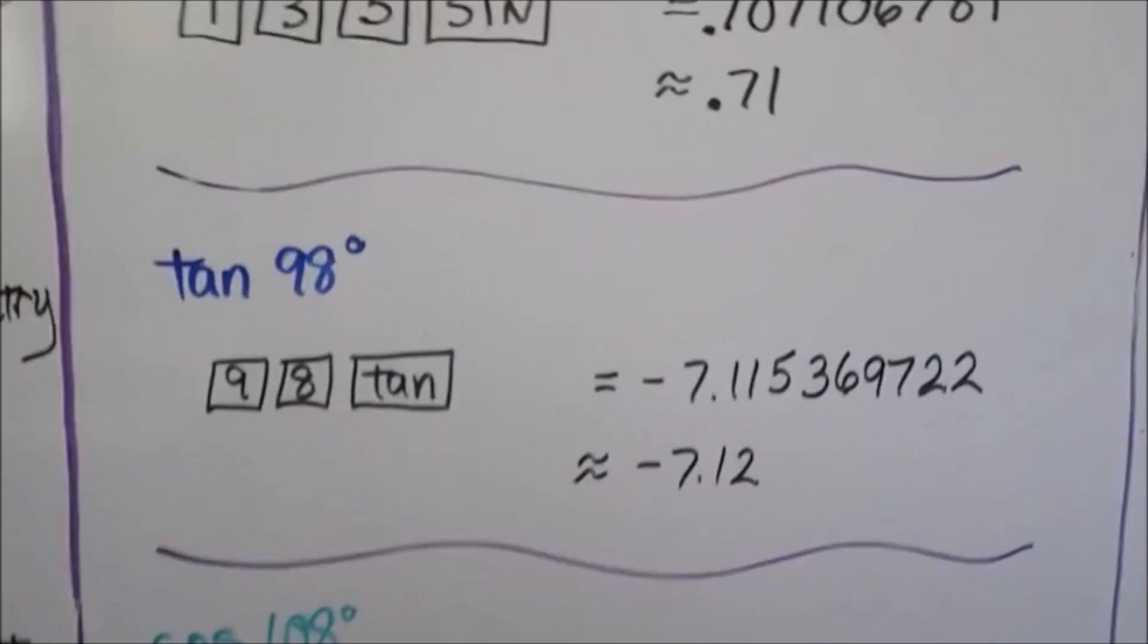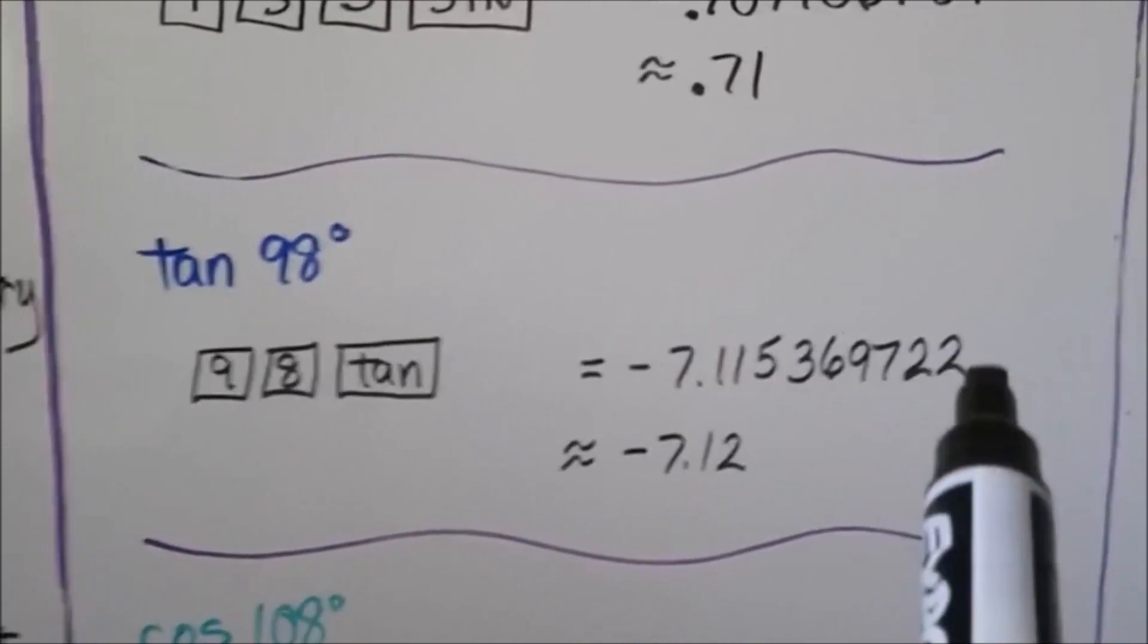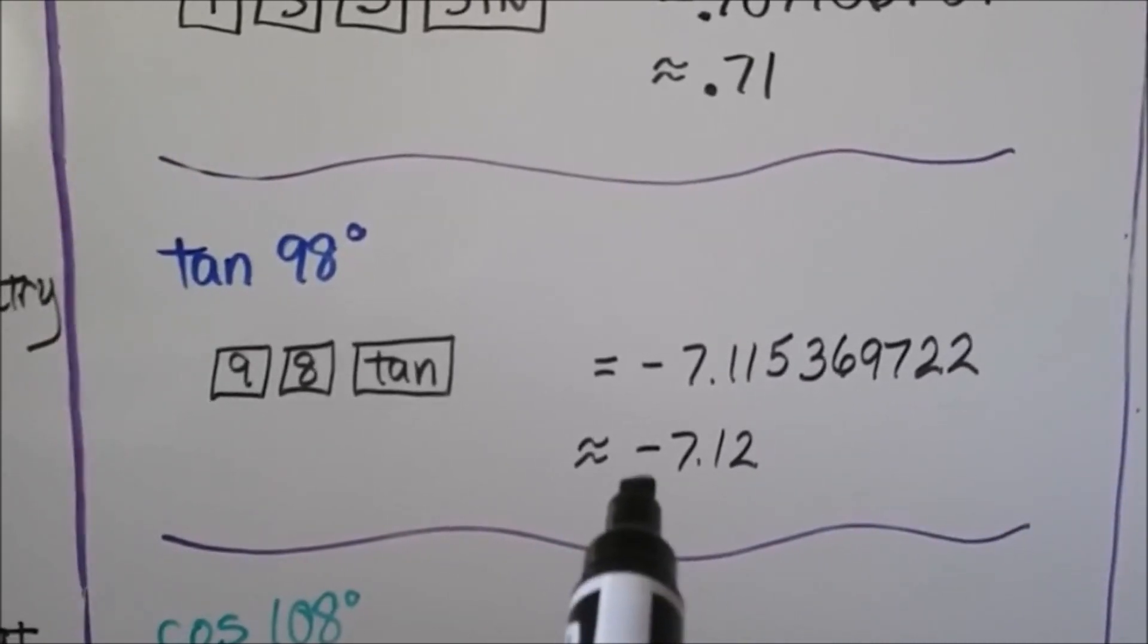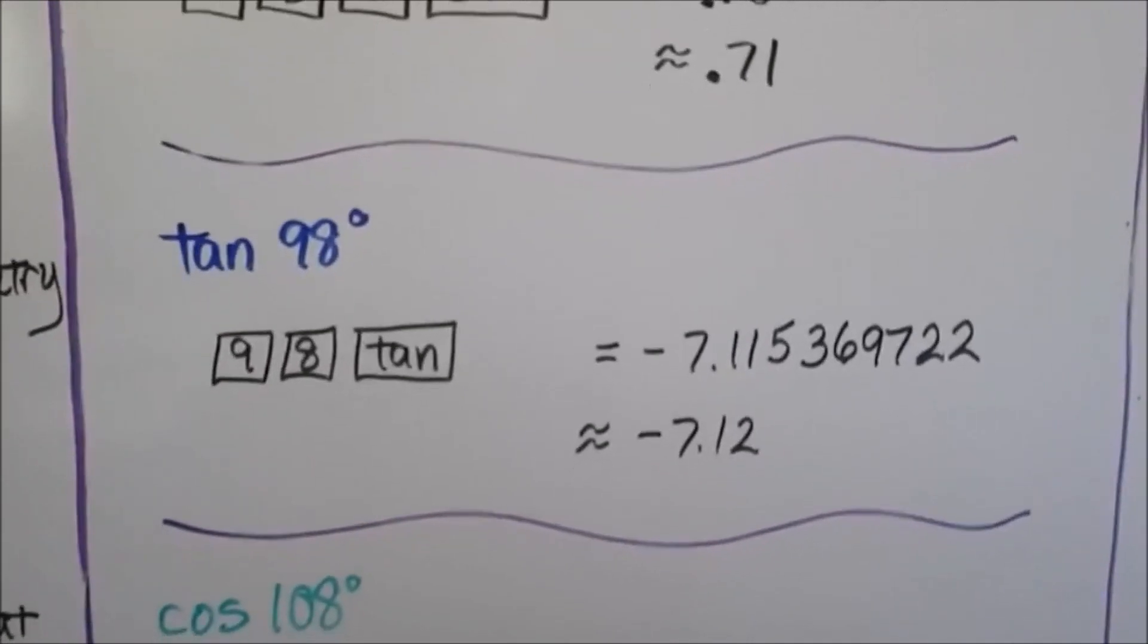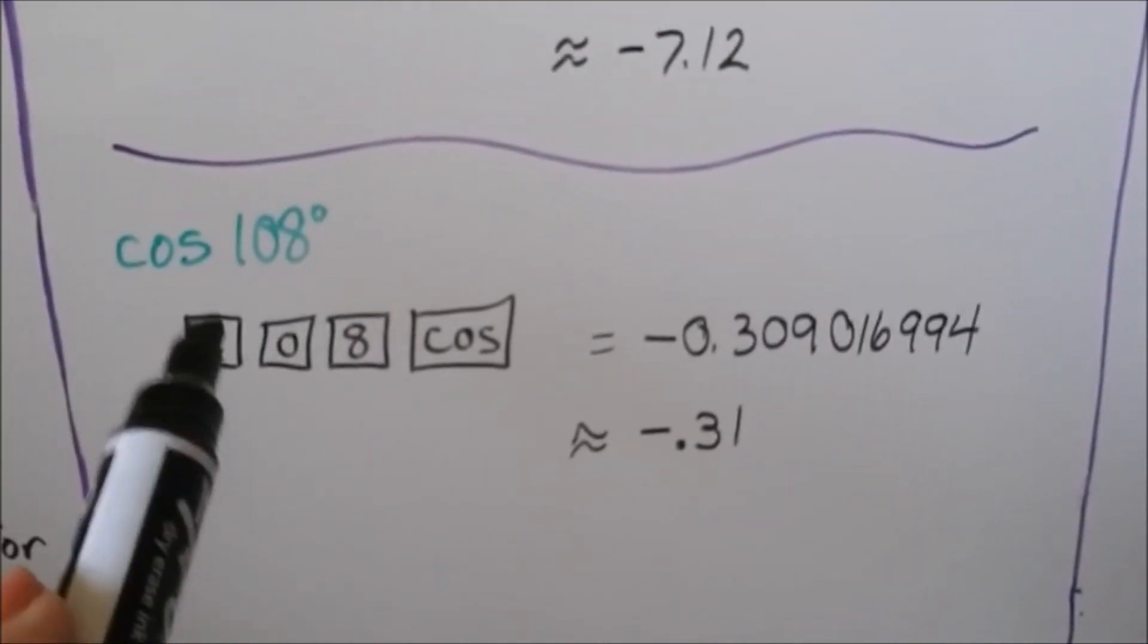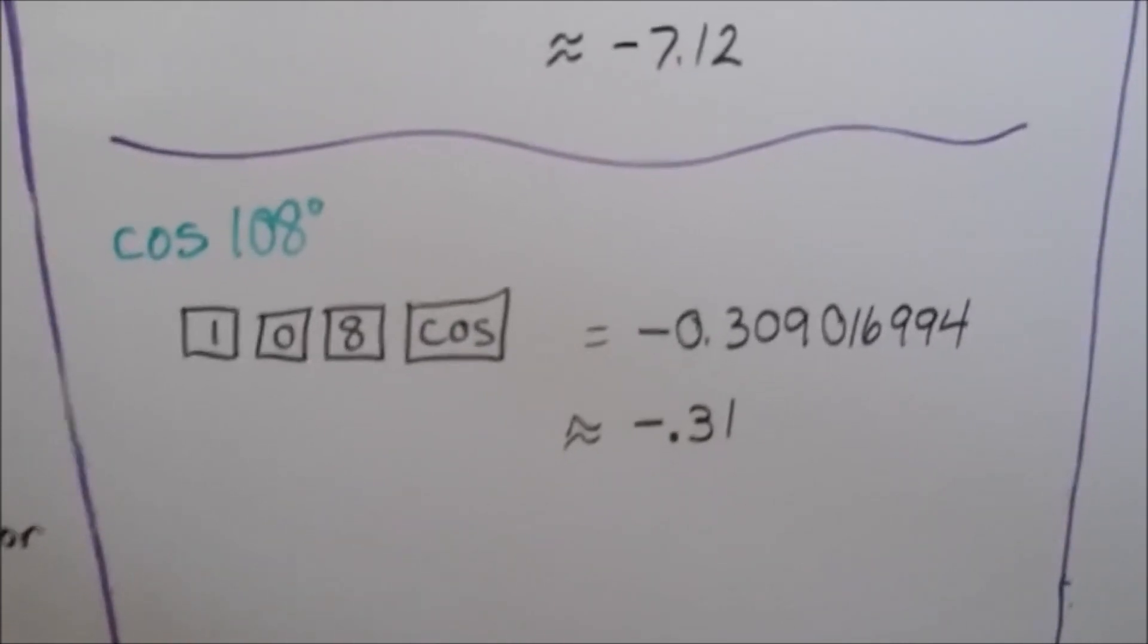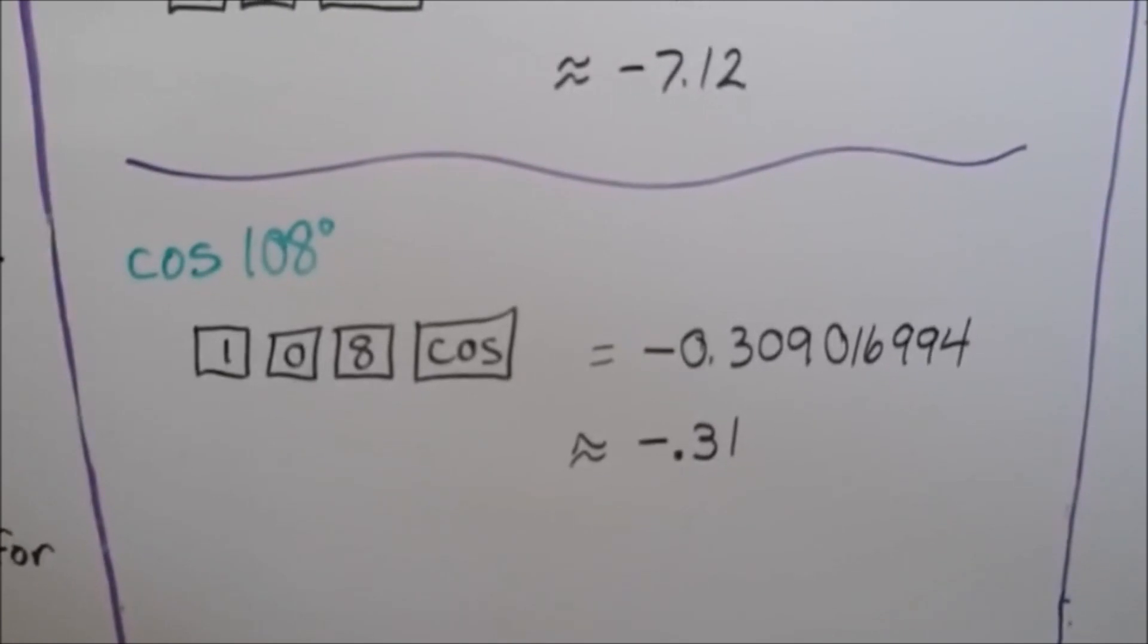For the tangent of 98 degrees, we just put in 9, 8 and hit the tangent button. And we get this nice long decimal and it's approximately negative 7.12. For the cosine of 108 degrees, we just hit 1, 0, 8 cosine. We get this nice long decimal that we can round to negative 0.31.